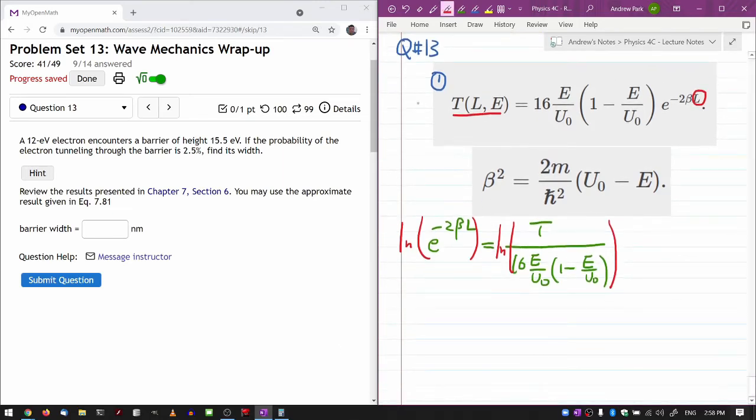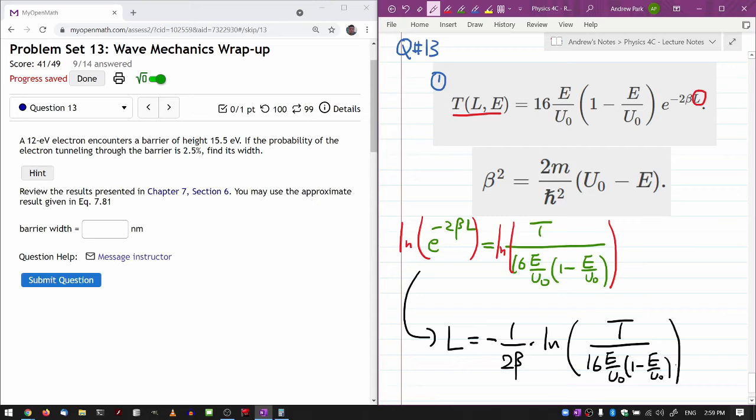And the natural log of that big thing on the right hand side. So solving that for L gets me minus 1 over 2 beta times natural log of T over 16 E over U-naught, 1 minus E over U-naught.